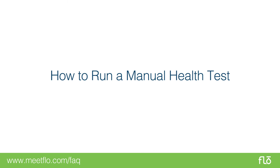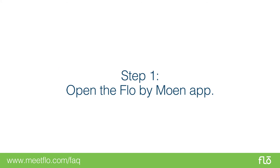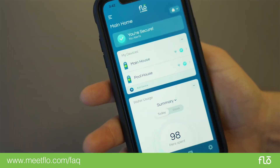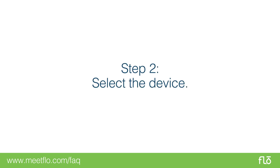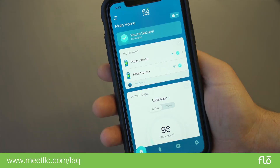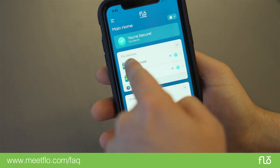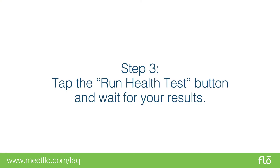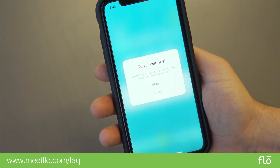You can run the health test manually at any time as a tool to help you identify leaks within your plumbing system. Open the Flow by Moen app, then select the desired device at the top and tap on the button "Run Manual Health Test" towards the bottom of the screen.